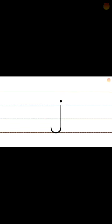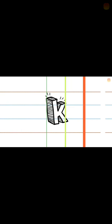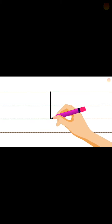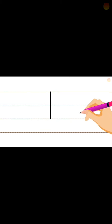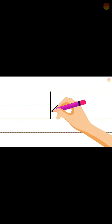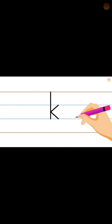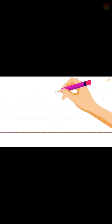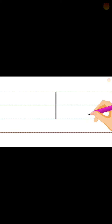Next, k. What is this? Small k. Start from the top, standing line to the bottom. Make the middle downward slanting line, and again a downward slanting line to the right side. Next, l. Very easy, you know. L — start from the top standing line. Finished.